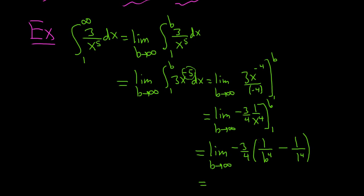All right, taking the limit. So this piece here is going to approach 0, because the number on the bottom is getting really, really big. So 1 over something getting big approaches 0. So we have negative 3 fourths, 0 minus 1, so it's just going to be 3 over 4.